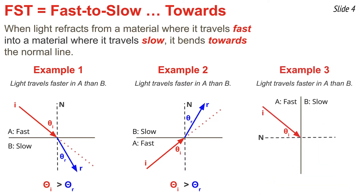In our final situation, we have a light ray traveling through the faster material A towards the slower material B, but this time the boundary is vertical instead of horizontal. Once more, the light ray will not travel along the straight line path, but instead will bend in one of two directions — either towards or away from the normal line. Because it's bending towards the normal line, the blue refracted ray will be closer to the normal line than the red incident ray is. Once more, the angle of refraction is smaller than the angle of incidence.